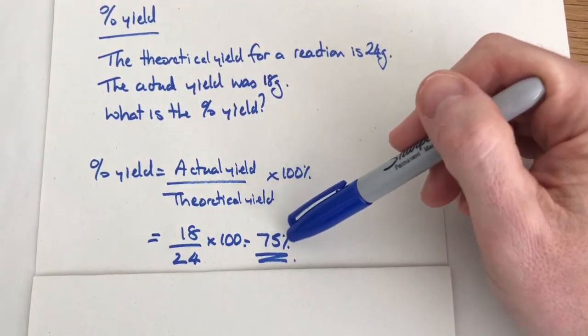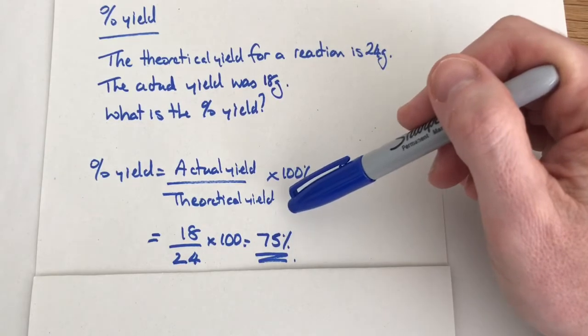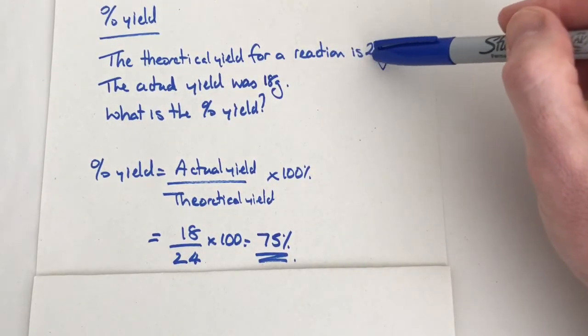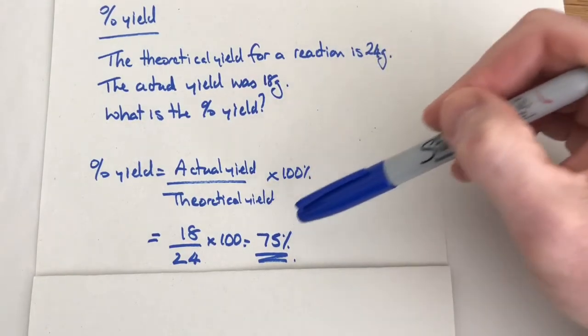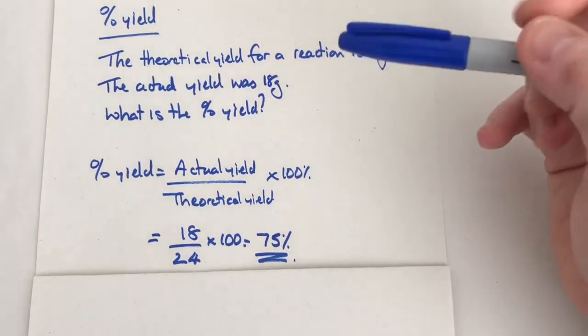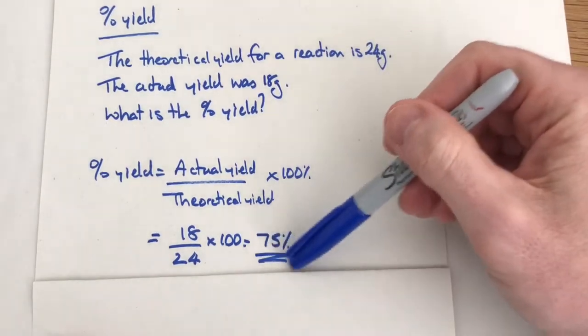This means that 75 percent of what we achieved is what we could have achieved. This is 75 percent success if you like. We should have got 24, we've got 18, 75 percent success. This figure is always going to be less than 100.